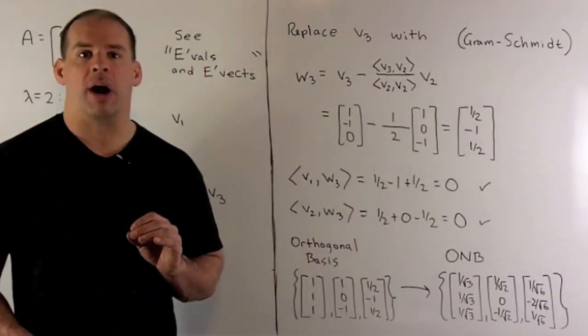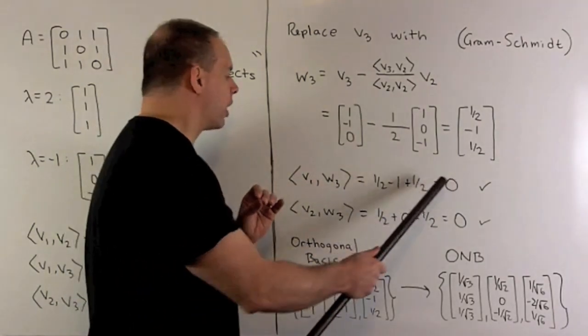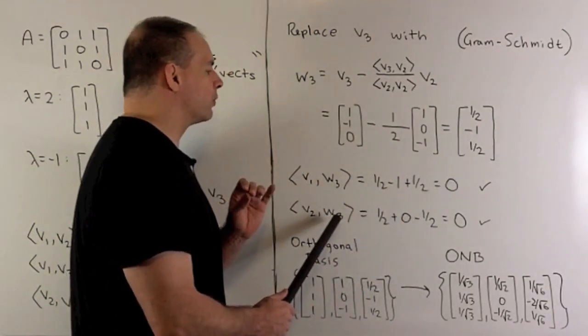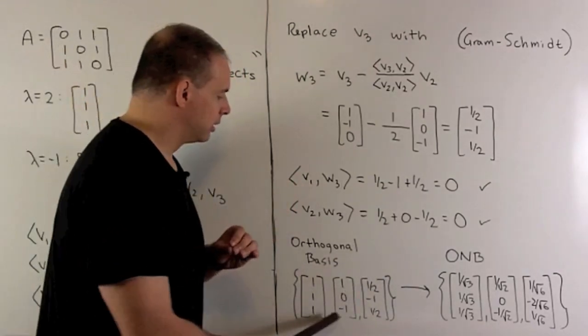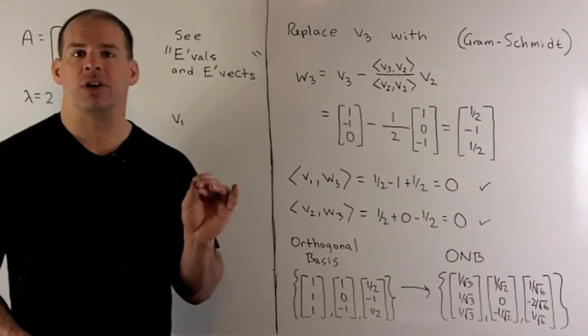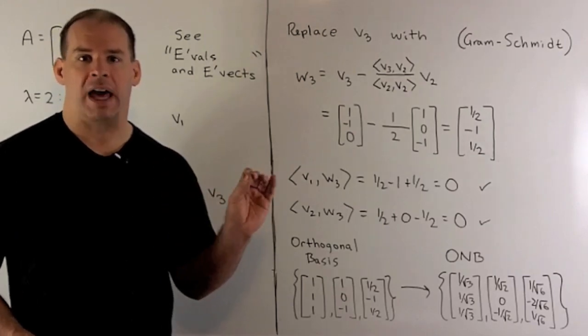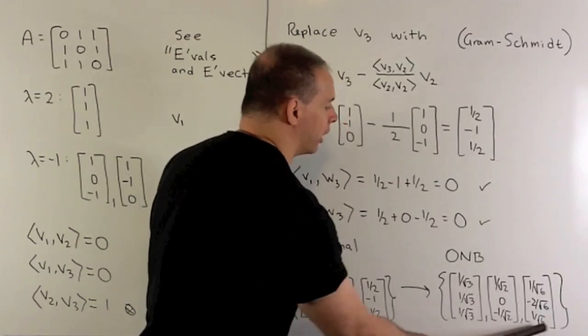If we recheck our inner products, what will happen? V1 against W3 is going to be 0. V2 against W3 is also going to be 0. So now I have an orthogonal basis. To get an orthonormal basis, I just need to have unit vectors. We take each vector, divide by its length. Then we have an orthonormal basis over here.